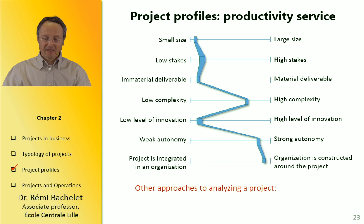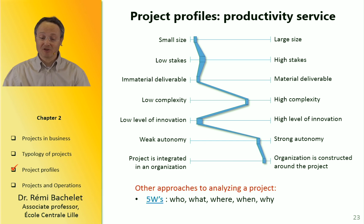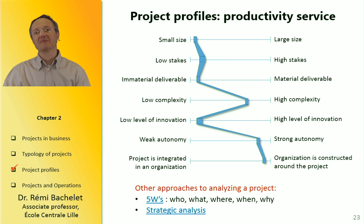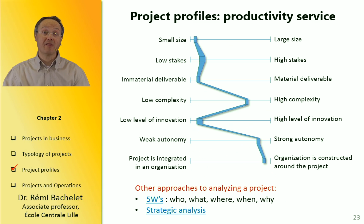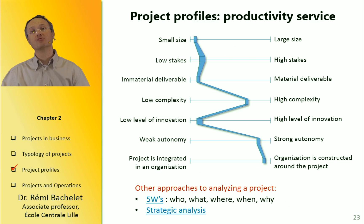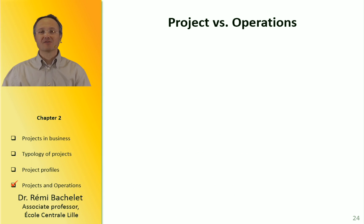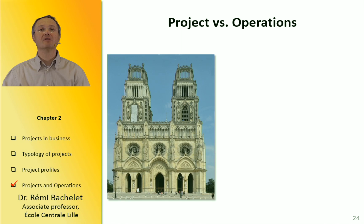Now let's look at other approaches for analyzing a project. You can use, for example, five questions — the five W's: who, what, where, when, and why. Another method is strategic analysis: a way in which you try to analyze and anticipate the position of the different actors in the project — are they going to oppose the project or are they going to help it? Now let's get on to the next chapter, where I will compare projects and operations.